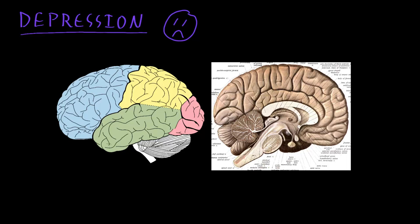When we look at the brains of patients that have major depressive disorder, either with the naked eye or with traditional microscope studies, there are basically no consistent abnormalities that have been seen in the tissues of these patients. However, special scans and research involving animal models have suggested that there are some functional abnormalities that can be detected in the brains of many patients with major depressive disorder.